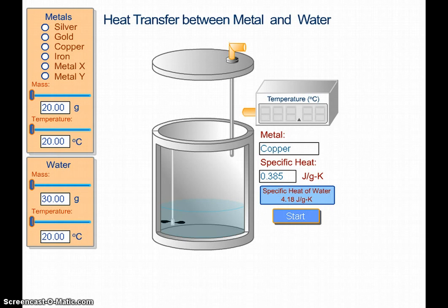This is an example of a calorimeter — not made of a coffee cup, but it still has the basic calorimeter shape with a lid and a container. You can see there's water in here, and it's hooked up to a thermometer probe rather than a thermometer. Let's first use 20 grams of copper at 20 degrees Celsius and add it to 30 grams of water also at 20 degrees Celsius, and see if there would be any change in energy.